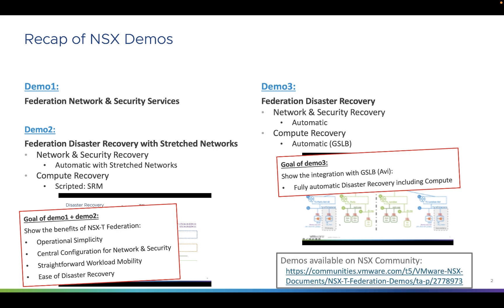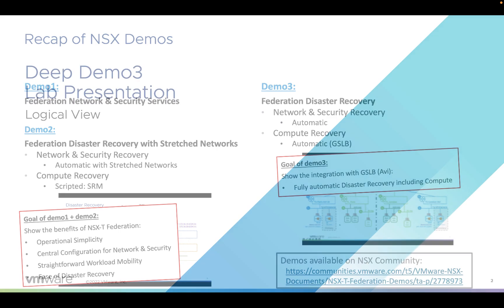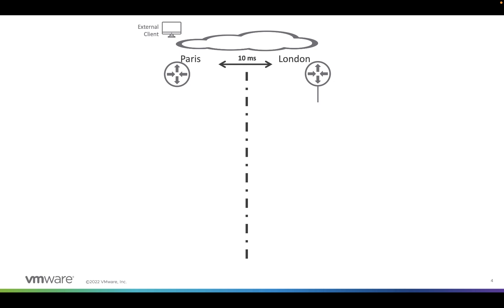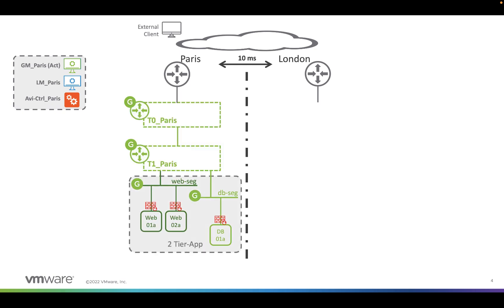All those demos are available on the provided link. Now let's look deeper at demo number three with the lab presentation — the logical view. I have two locations: Paris and London. In Paris, I have a global manager active, a local manager for Paris, and an AVI controller for Paris. I deployed using the global manager this topology: a Tier-0, a Tier-1, and a couple of segments with my two-tier app in Paris.